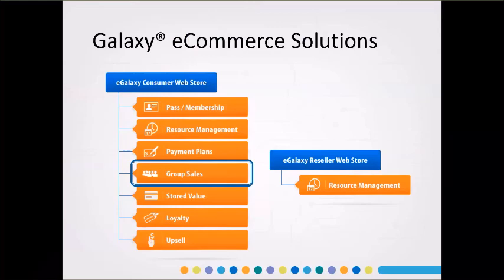There's a key difference I do want to point out: any of these orders that are placed through the eGalaxy Group Sales web store are associated with the group that the person who's doing the shopping belongs to. So if a teacher logged in, the order that teacher places is associated with the school they work for. All of the users are associated with their specific group, whereas in our traditional web store it's associated with just web sales. So now you're able to further segment out for tracking and reporting purposes which groups are placing orders online and how much.